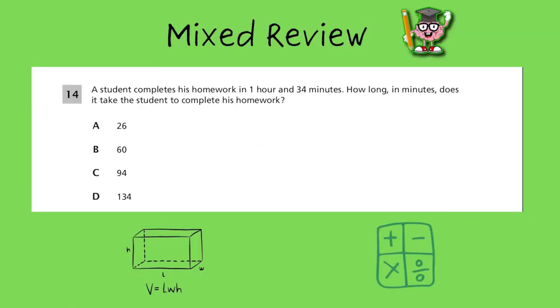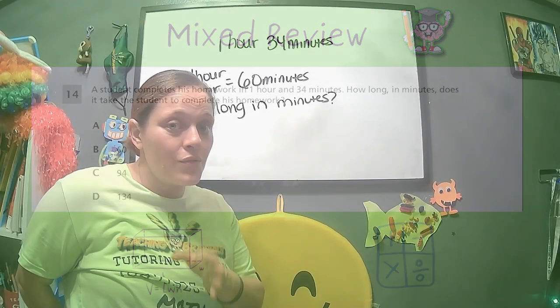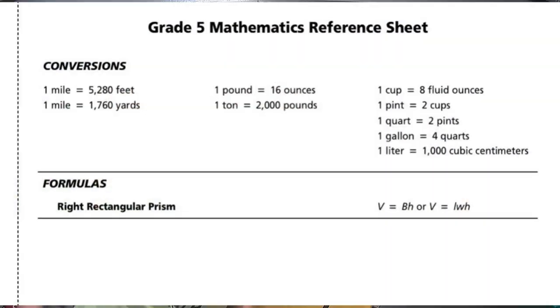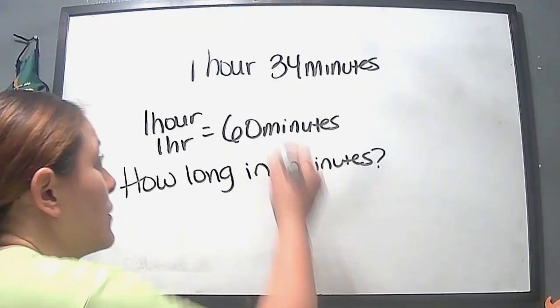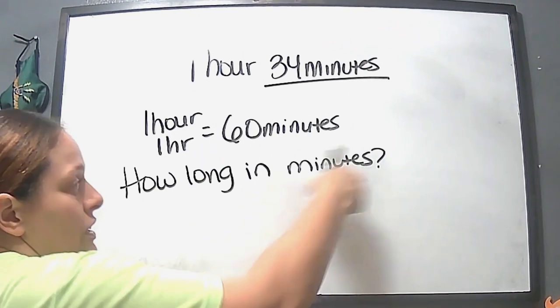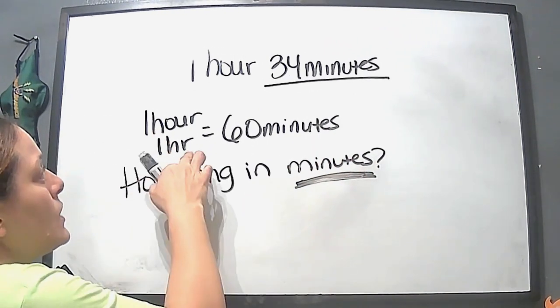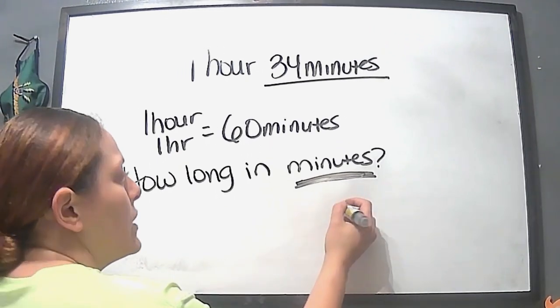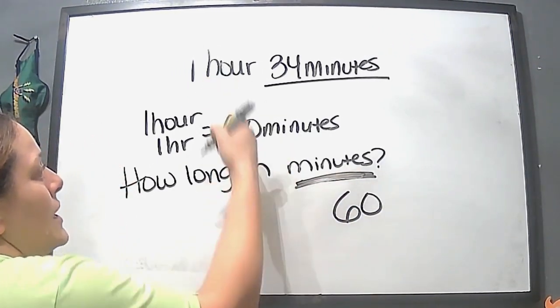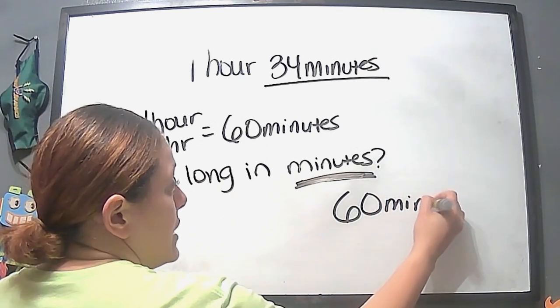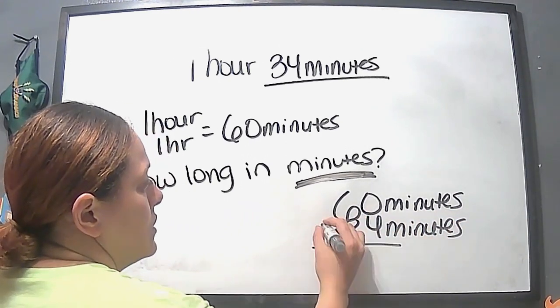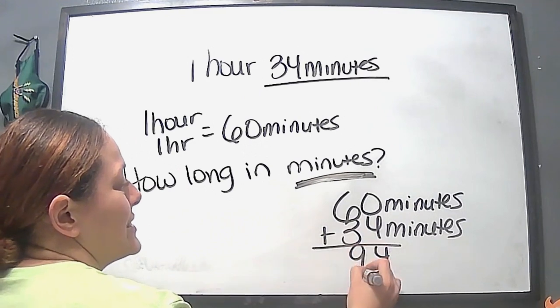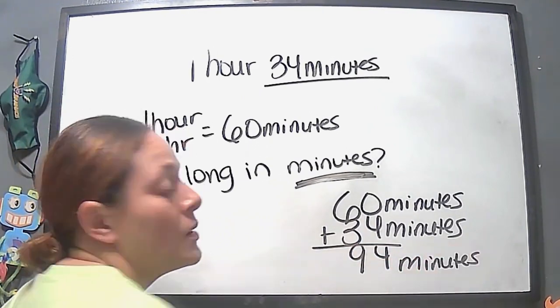A student completes his homework in 1 hour and 34 minutes. How long in minutes does it take the student to complete his homework? I hope you did not put the reference sheet too far away. Read this again. This one, we have hours and minutes. So we have to know that 1 hour equals 60 minutes. So we already know that this is 34 minutes, because our answer needs to be in minutes. And we know 1 hour is 60 minutes. So the only thing we have to do is do 60 minutes, because we're converting 1 hour to 60 minutes, plus the 34 minutes. And we get, well, 4 plus 0 is 4, 6 plus 3 is 9, so that gives us 94 minutes.